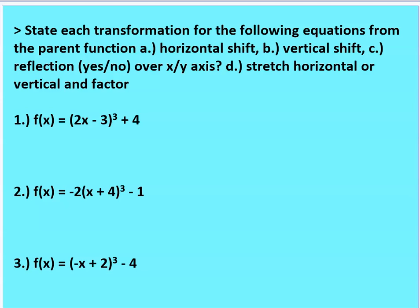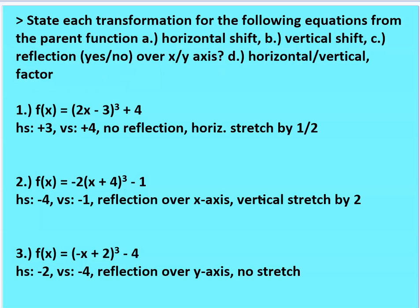Here are the answers. The first equation has a horizontal shift by 3, vertical shift by 4, no reflection either way, and a horizontal stretch by one-half. The second equation has a horizontal shift of negative 4, vertical shift of negative 1, reflection over the x-axis, and a vertical stretch by 2. The last one has a horizontal shift of negative 2, vertical shift of negative 4, reflection over the y-axis, and no stretch.